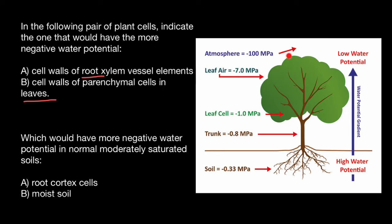For example, at the air, water potential we consider about minus 100 MPa or can be 160 MPa. This also depends on the humidity of the air. The lower humidity of the air, the more negative water potential of the air.